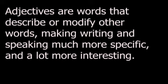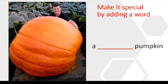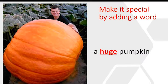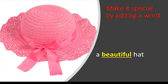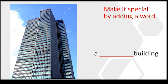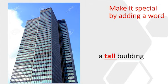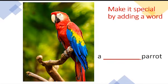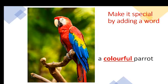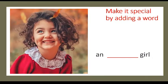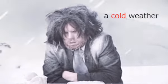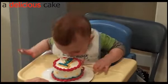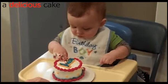Now let us see the picture and complete it by adding a describing word to it. Pumpkin — it's a huge pumpkin. Hat — a beautiful hat. Building — a tall building. Parrot — a colorful parrot. A girl — an adorable girl. Weather — cold weather. A cake — a delicious cake.